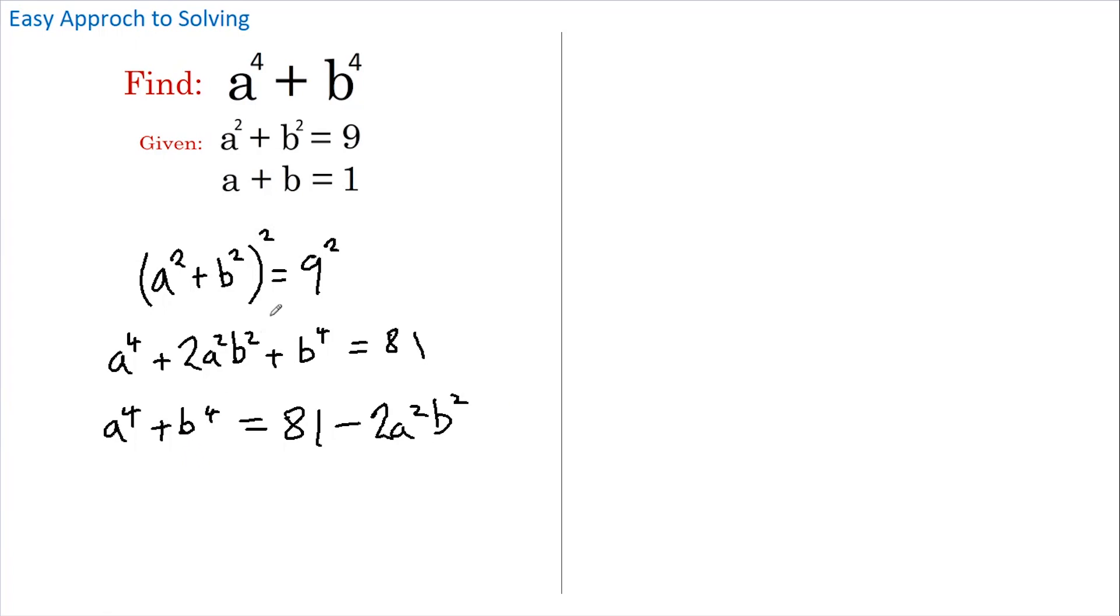Now you'll notice that a to the 4 plus b to the 4 is what we want to find. Therefore we just need to evaluate this. So let's now take this equation a plus b equals 1 and square both sides.